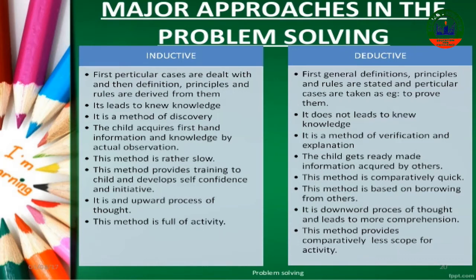Another category is factors associated with the problem solver. The first category was about the nature of the problem — what kind of problem it is. The second is factors associated with the problem solver. The problem solving behavior also depends much on factors associated with the nature, capacities, and many other things related to the problem solver. Some of the outlined factors of these are as follows.